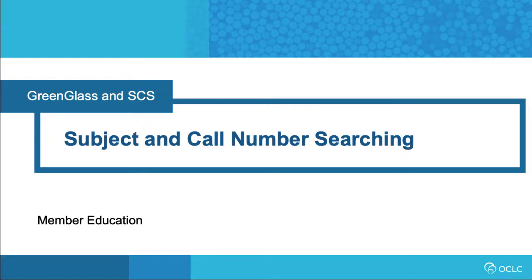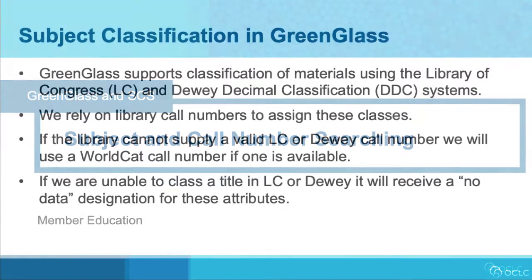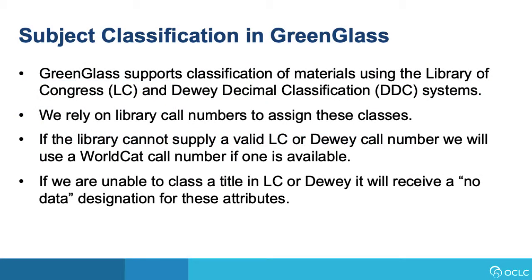This video explains how subject and call number searching work in GreenGlass. GreenGlass supports classification of materials using the Library of Congress and Dewey Decimal Classification systems, relying on library call numbers to assign these classes. If the library cannot supply a valid LC or Dewey call number, we will use a WorldCat call number if one is available. If we are unable to class a title in LC or Dewey, it will receive a NoData designation for these attributes.